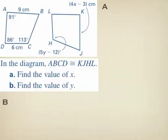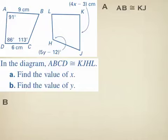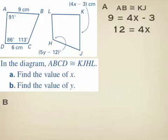Part A asks us to find the value of X, which is for side KJ. From the congruence statement ABCD ≅ KJHL, side KJ corresponds to side AB. We are given that AB is 9 centimeters and KJ is 4X minus 3 centimeters. Because these sides are congruent, we set them equal: 9 equals 4X minus 3. Adding 3 to both sides gives 12 equals 4X. Dividing both sides by 4 gives X equals 3.